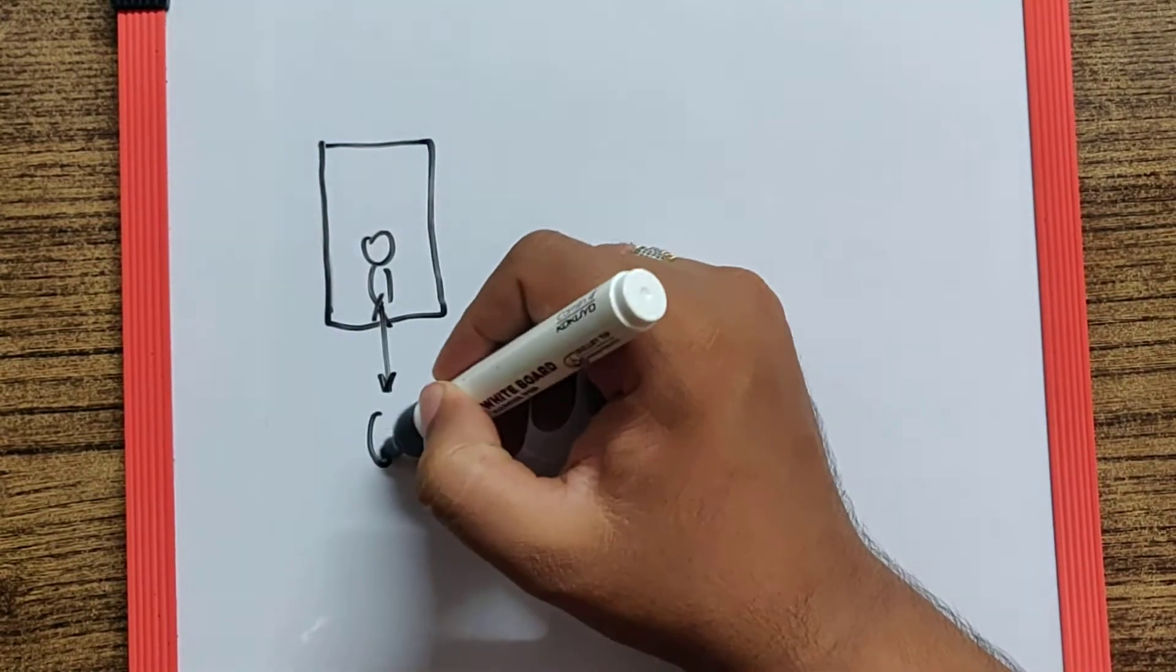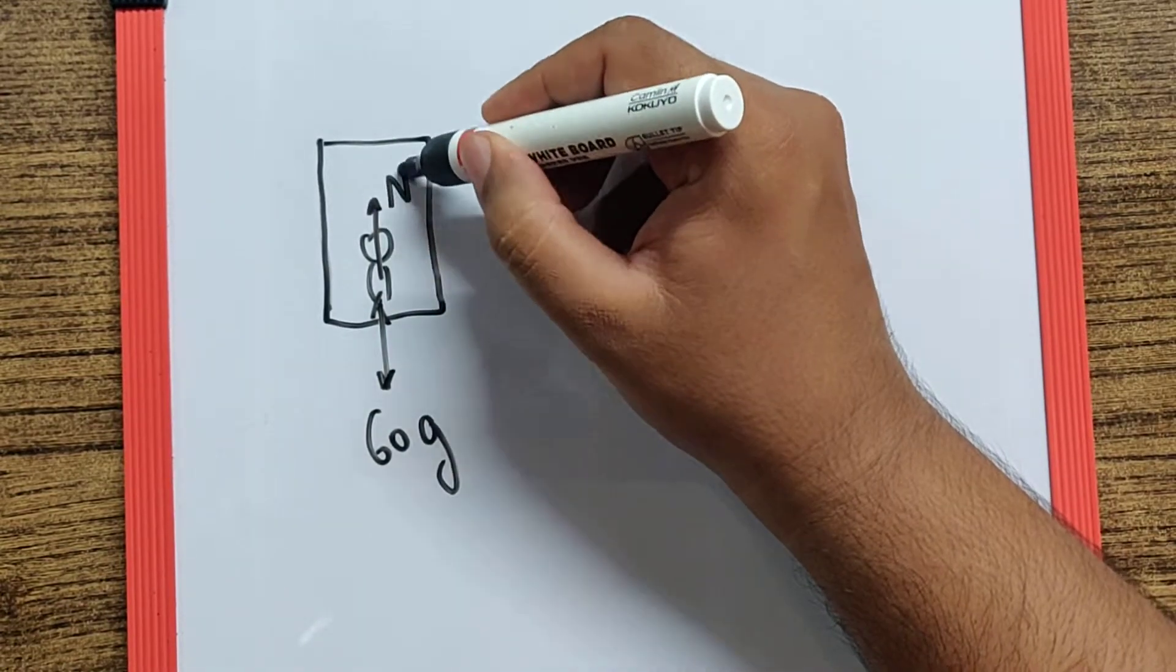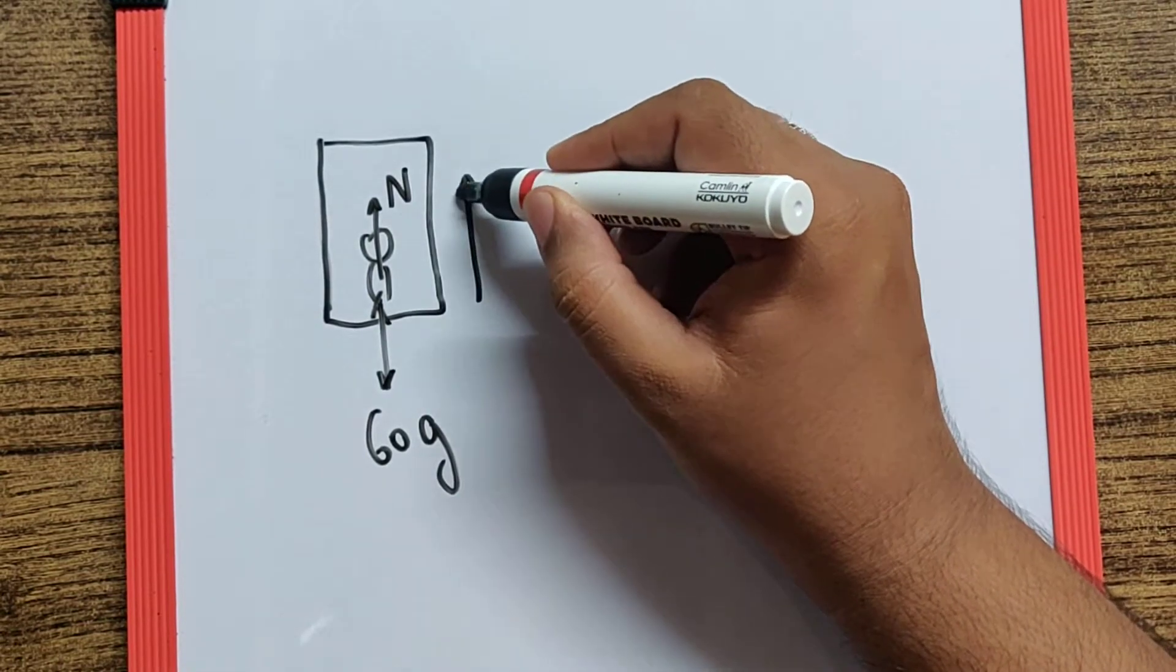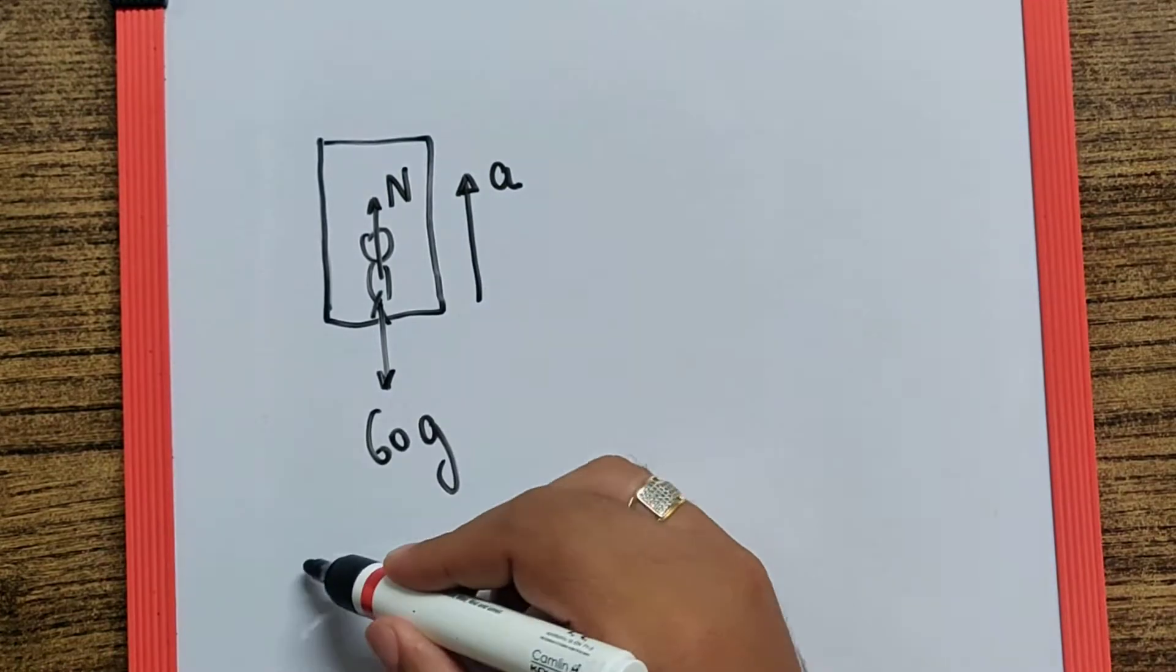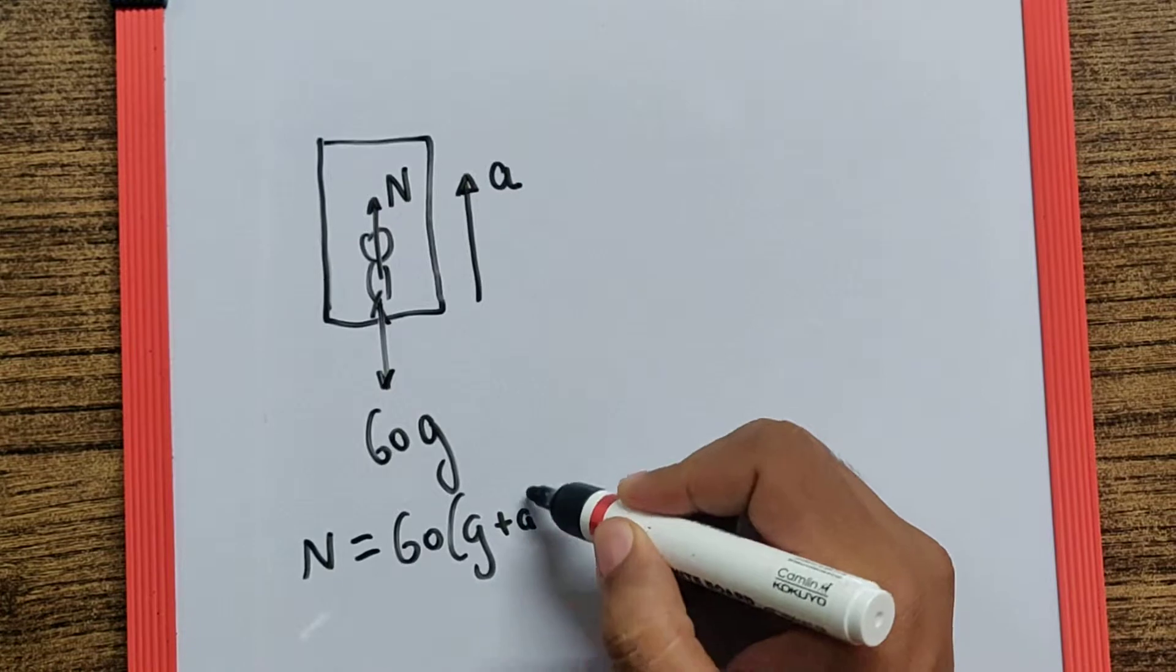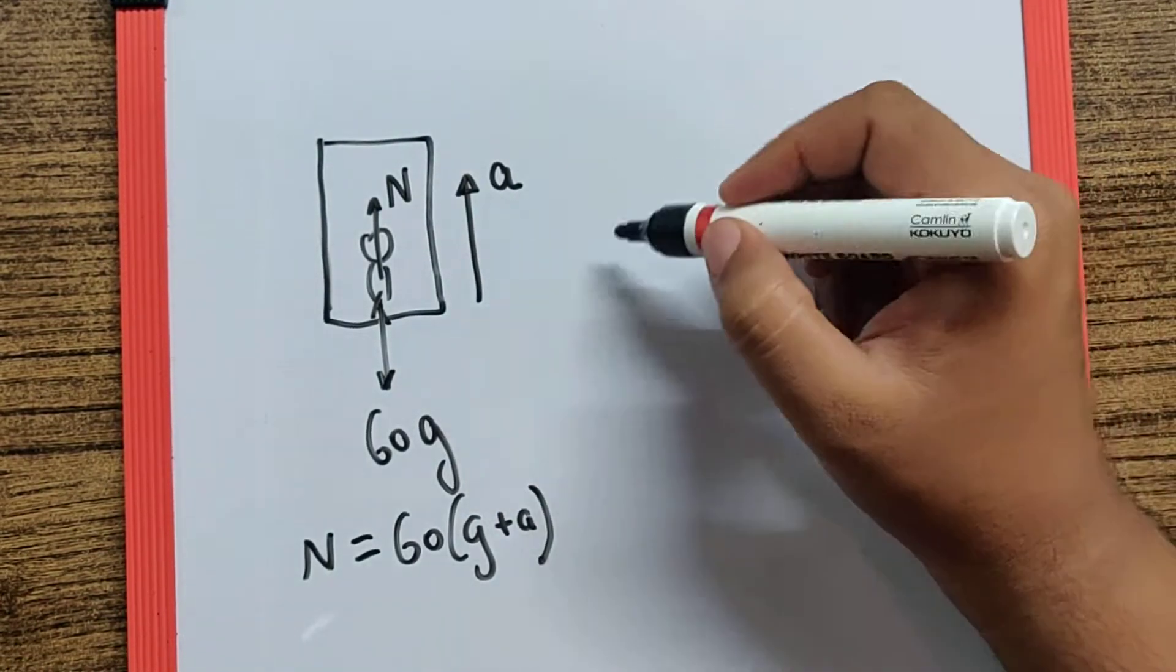If the lift is moving upwards with a positive acceleration, then I can say N becomes 60 bracket G plus a, because the pseudo acceleration will act downwards.